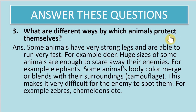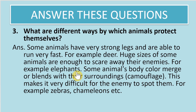What are the different ways animals protect themselves? Some animals have very strong legs and can run very fast, for example deer. The huge size of some animals is enough to scare away their enemies, for example elephants. Some animals' body color merges or blends with the surrounding — this is called camouflage — making it very difficult for enemies to spot them, for example zebras and chameleons.